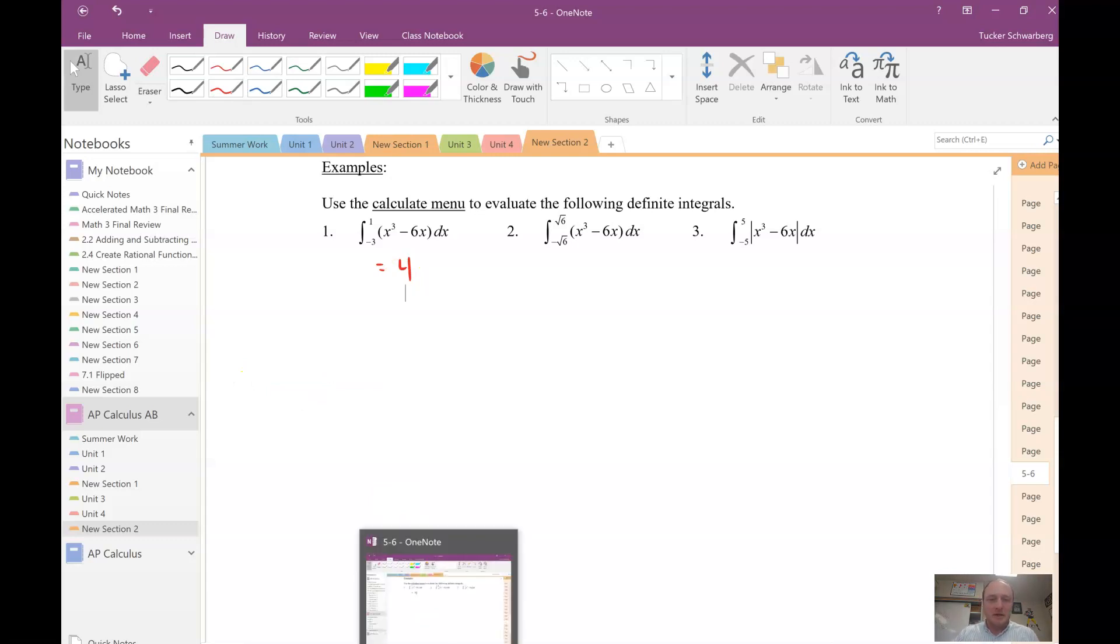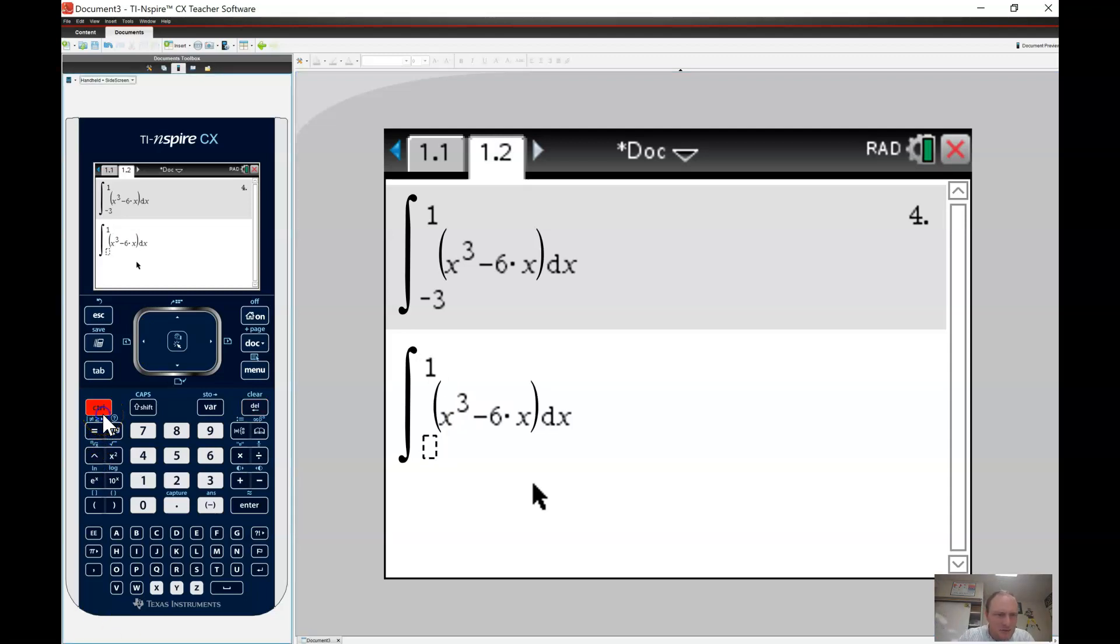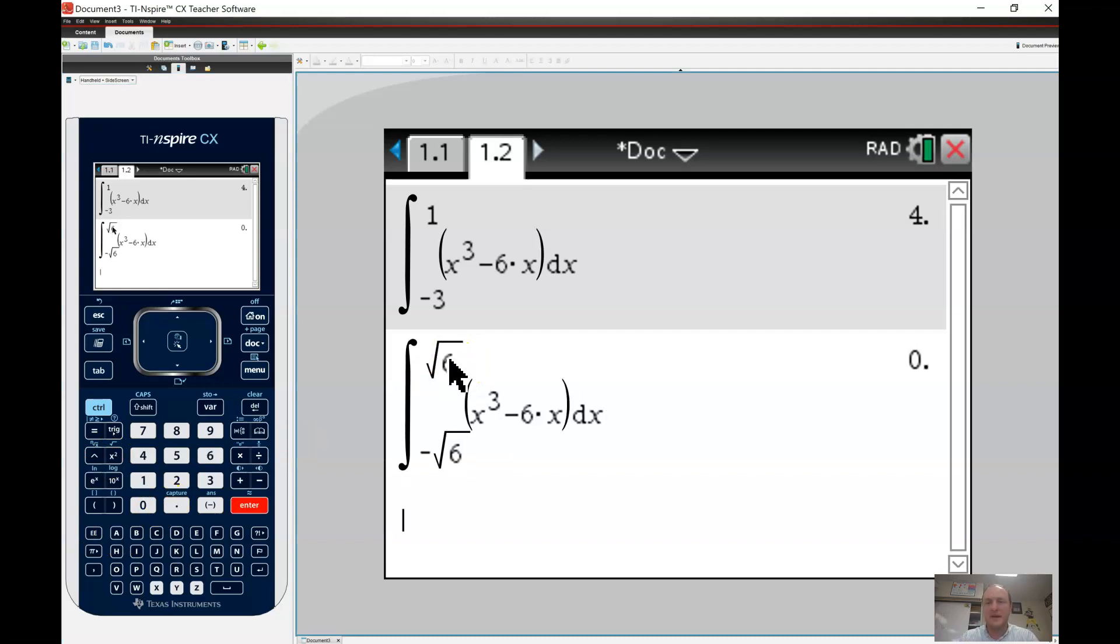All right, now let's go ahead and integrate this from root 6 to root 6. So I want square root of 6. Sorry, negative 6 to positive root 6. And we get 0. 0, what the heck?